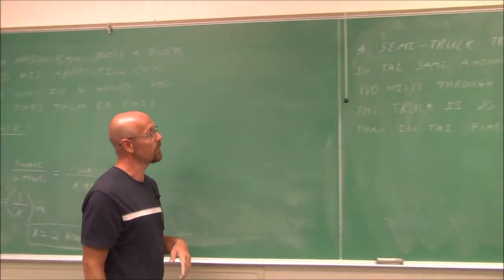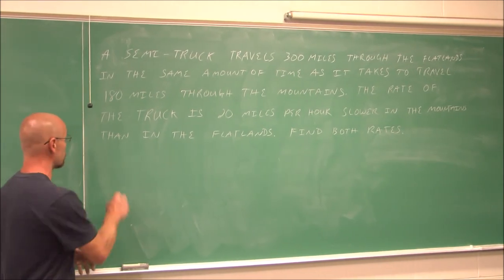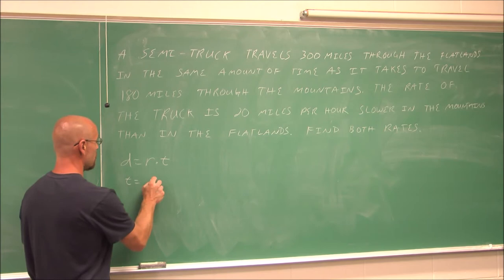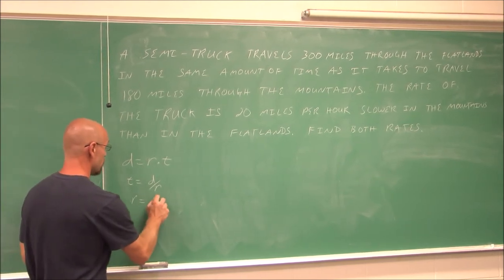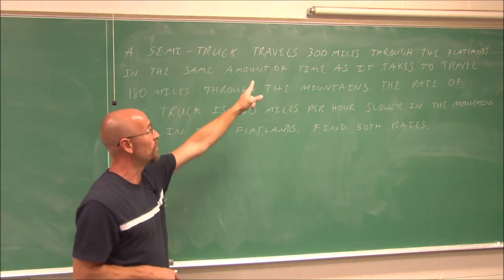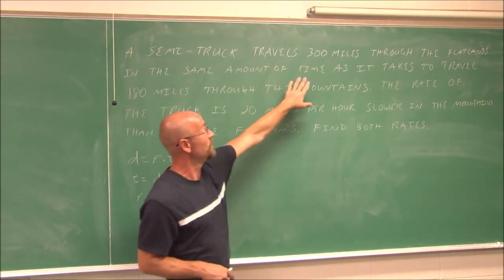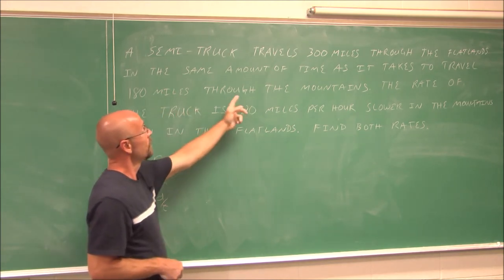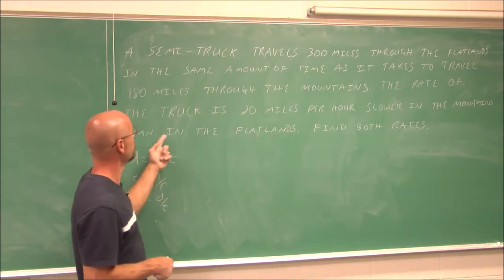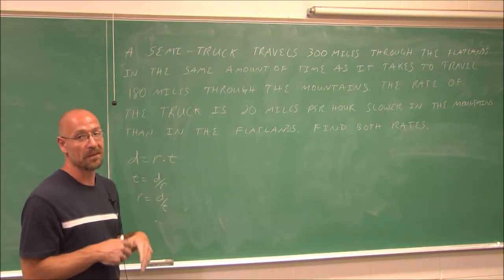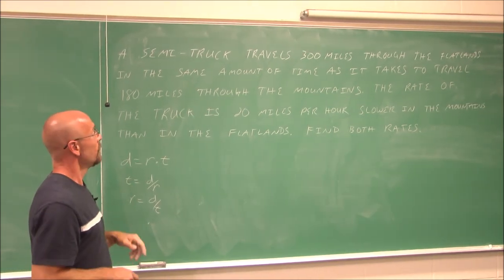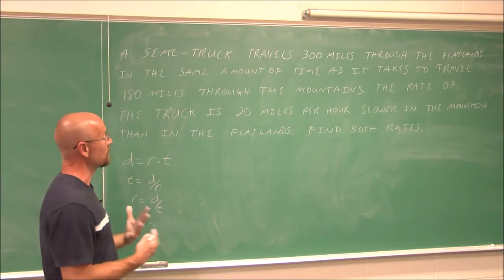One more example involving distance, rate, and time. The equation is distance equals rate times time, which we can rearrange: time equals distance over rate, or rate equals distance over time. A semi-truck travels 300 miles through the flatlands in the same amount of time as it takes to travel 180 miles through the mountains. The rate of the truck is 20 miles per hour slower in the mountains than in the flatlands. Find both rates. We can draw an illustration as a tool to help us understand what's happening.